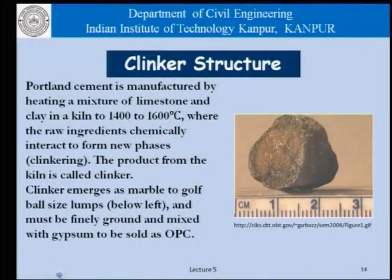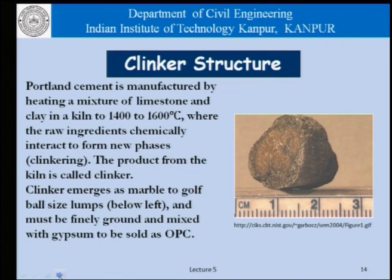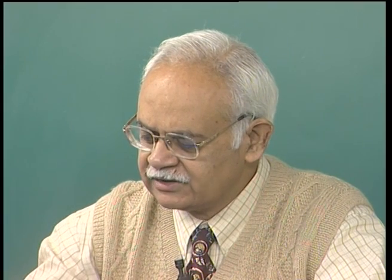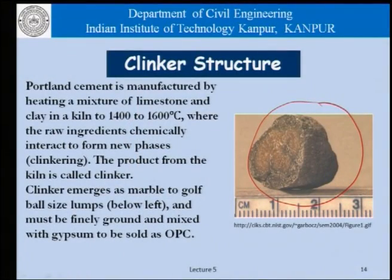Coming to the clinker — Portland cement is manufactured by heating a mixture of limestone and clay in a kiln to a temperature of 1400 to 1600 degrees centigrade, where the raw ingredients chemically interact to form new phases during clinkering, and the product is called clinker. This clinker emerges as marble or golf ball sized lumps as shown here, and must be finely ground to produce the OPC. We can see here a particle of clinker which, along the scale given at the bottom, is about two and a half centimeters in diameter.